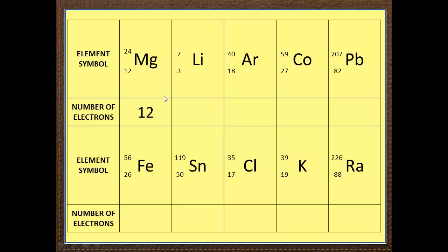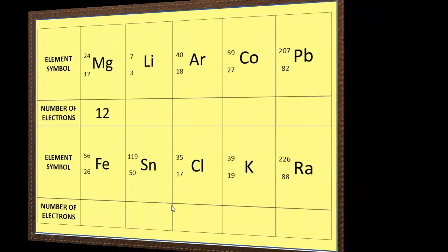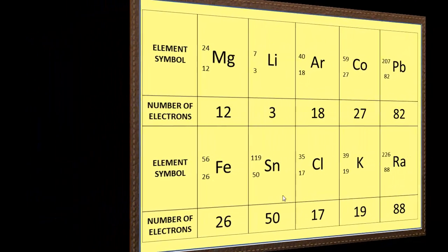Now, it's very easy to find out how many electrons. What we've got to do is look at the atomic number, which is always the smaller of the two numbers. And it doesn't matter which way around these are. So, here we've got 10 elements of the periodic table. Magnesium, lithium, argon, cobalt, lead, iron, tin, chlorine, potassium, and radium. Now, I want you to pause the video. I want you to fill in how many electrons you think there are in these elements. So, pause it. I'll pause now.